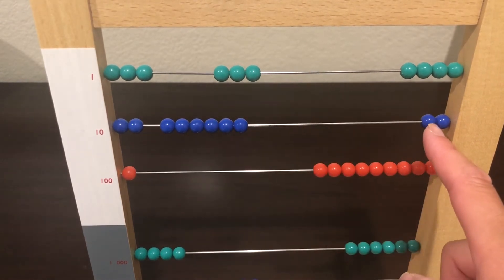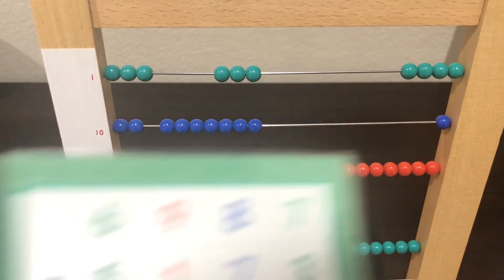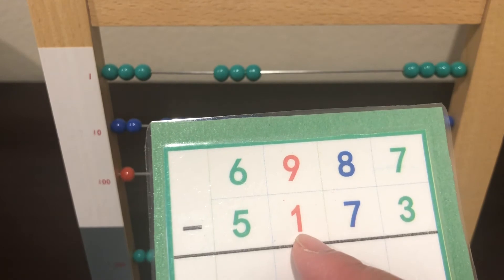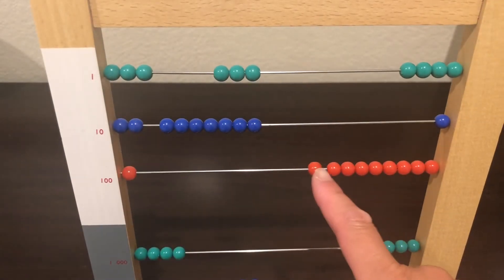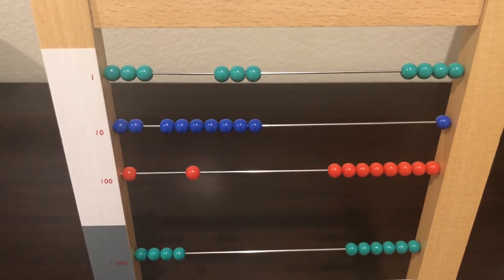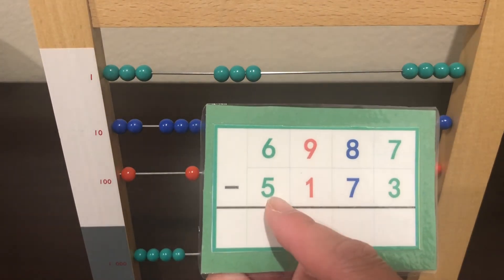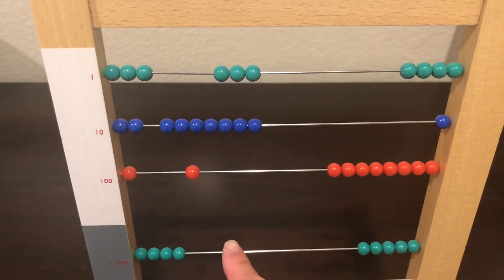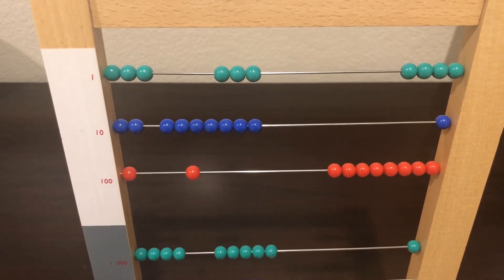6 tens, 7 tens. We are going to take away 100. Now we are going to take away 5,000. 1,000, 2,000, 3,000, 4,000, 5,000. Now let's check how many we've got left.